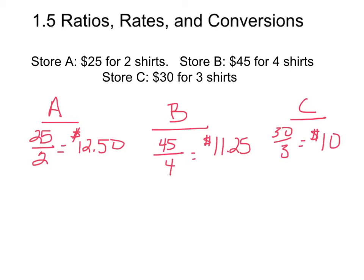Store B and C, you can see as well. Store B will give you $11.25 per shirt, and C gives you $10 per shirt. So which one would be the better deal? The best deal would be Store C because it has the unit rate that's the lowest. Store C has the unit rate that's the cheapest price per shirt.